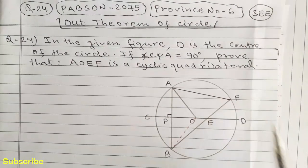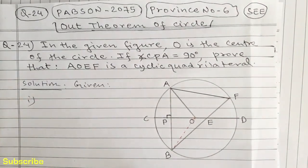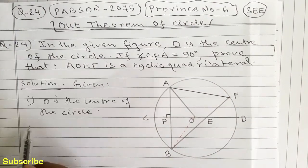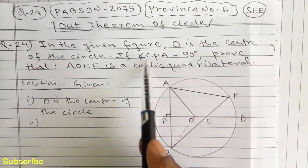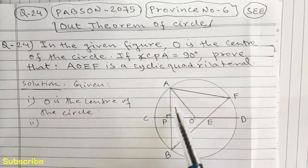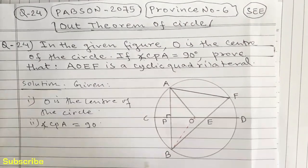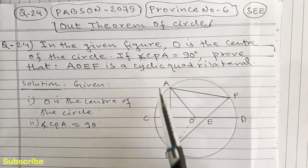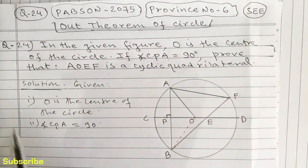Let's write the given information first. In this question we are given: number one, O is the center of the circle; number two, angle CPA is equal to 90 degrees. According to this question, we have to prove that AOEF is a cyclic quadrilateral.